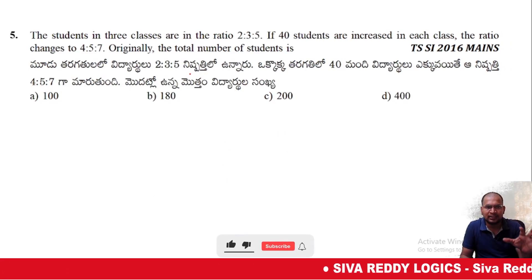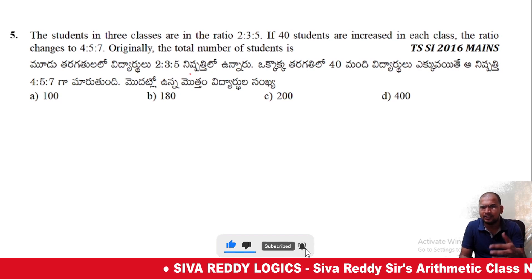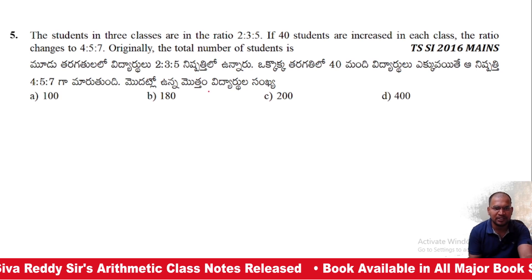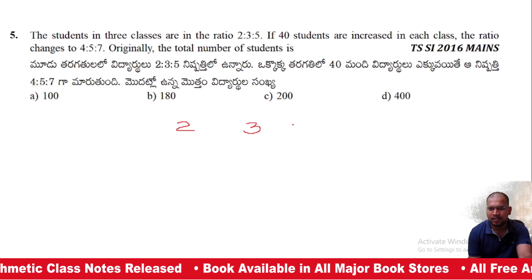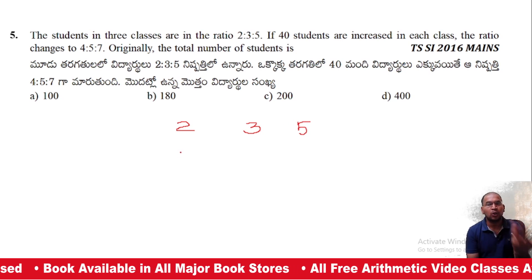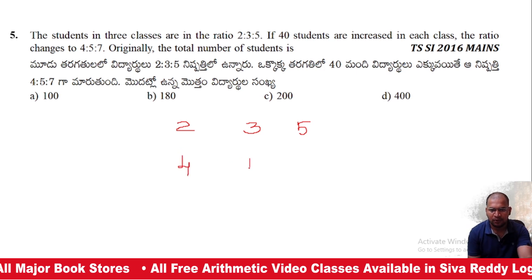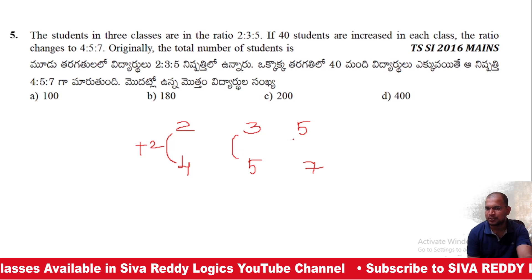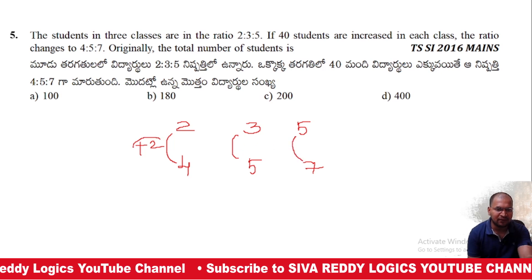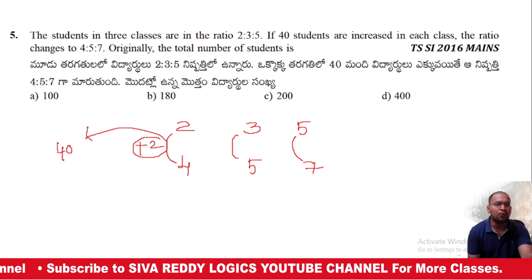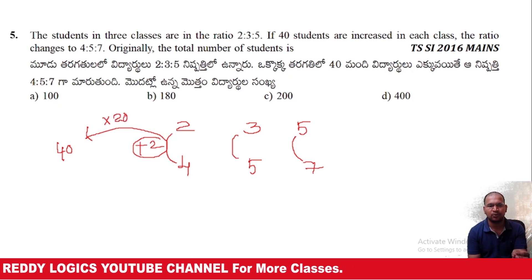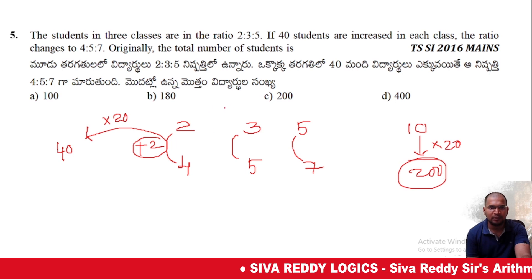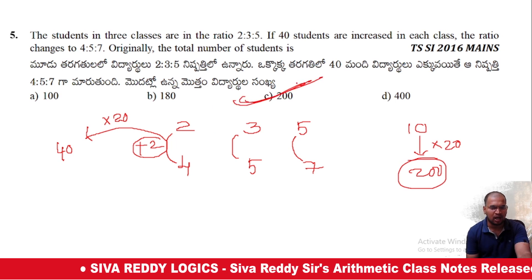Fifth question: Students in 3 classes are in ratio 2:3:5. If 40 students are added to each class, the ratio becomes 4:5:7. What was the original total number of students? Setting up equations, 2 parts difference equals 40 students, so each part equals 20 students. Option C will be the right answer.